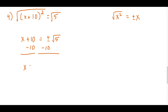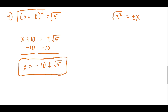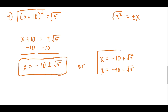Our solution is x = -10 ± √5. This represents two answers: x = -10 + √5 and x = -10 - √5. Writing ±√5 in one expression is perfectly fine, or you can write both answers separately.